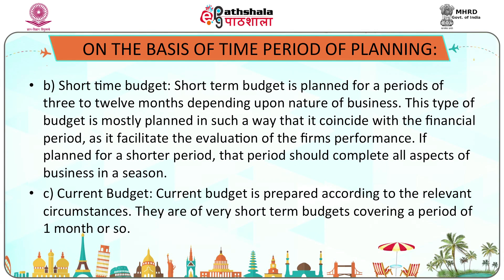A short-term budget is planned for a period of 3 to 12 months depending on the nature of the business. It is mostly planned to coincide with the financial period, facilitating evaluation of the firm's performance, and if planned for a shorter period, that period should encompass all aspects of business in a season. A current budget is prepared according to the relevant circumstances and covers a very short term — a period of one month or so.